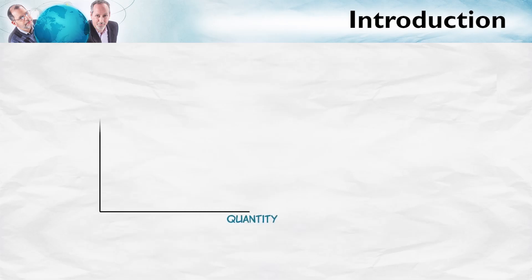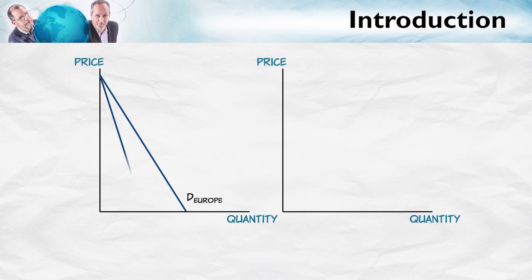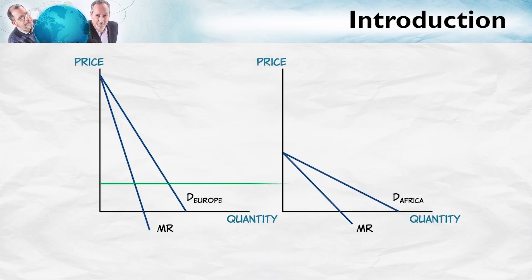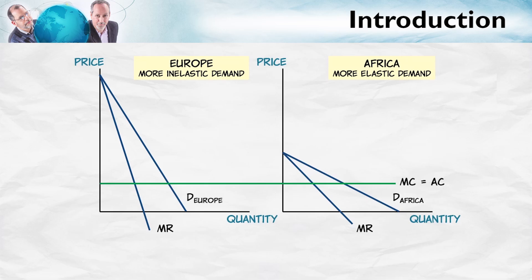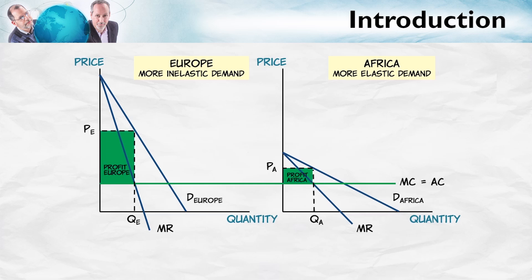Why is it that price discrimination can increase profits? We can show this using a diagram we've already seen. We know that if the demand curve is more inelastic, that suggests the monopolist should set a higher price and put on a higher markup, while if the demand curve is more elastic, that means a lower price. Suppose that the monopolist can segment its market into two parts — say Europe and Africa — and that the demand curve in Europe is much more inelastic than in Africa, where consumers are poorer and more sensitive to price. The conclusion is to set a high price in the market with inelastic demand, Europe, and a lower price in the market with elastic demand, namely Africa.